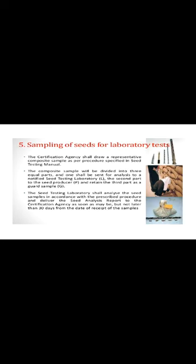The next phase is Sampling of Seeds for Laboratory Testing. The Certification Agency shall draw a representative composite sample as per the procedure specified in the Seed Testing Manual. The composite sample will be divided into 3 equal parts: one shall be sent for analysis to the Notified Seed Testing Laboratory, the second part to the seed producer, and the third part retained as a guard sample. The seed testing laboratory shall analyze the samples and deliver the seed analysis report to the Certification Agency not later than 30 days from the date of receipt of the samples.